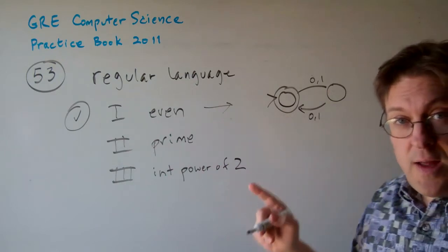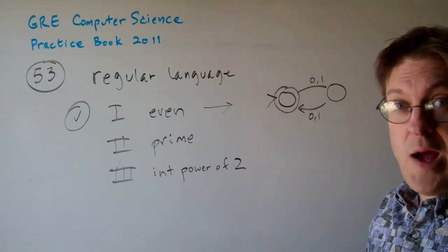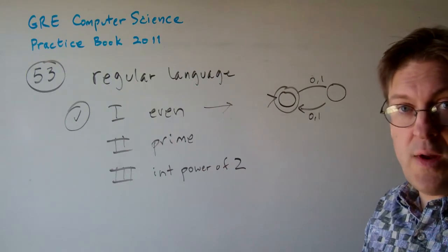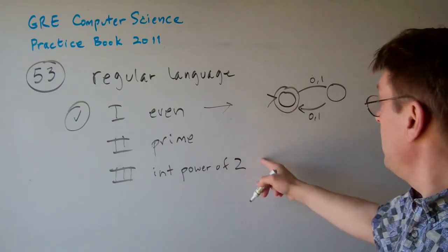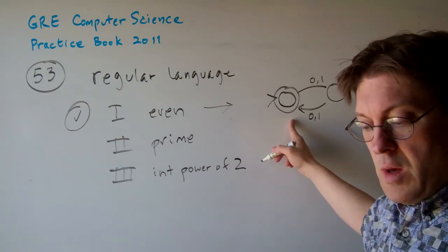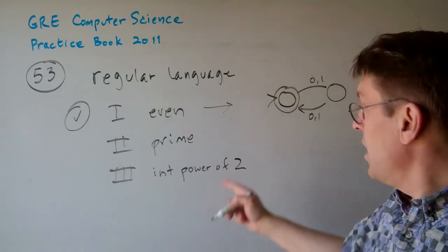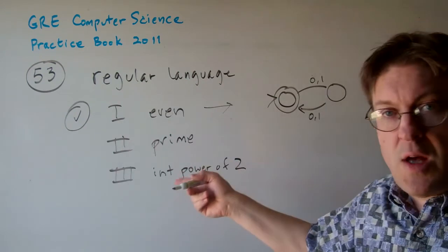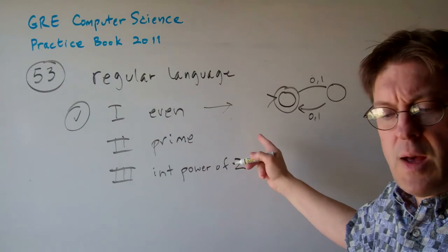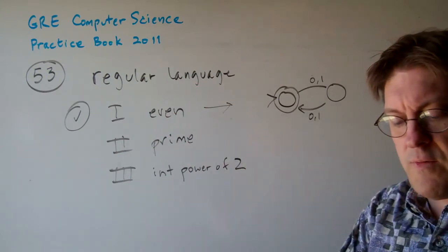How are we going to do a finite state automaton that's prime? There's no way to do that. There's no way to make one that's an integer power of 2 either. I mean, I'm not sure how you can prove that. It'll probably take a lot longer than this video can allow. But just think to yourself, how are you going to make a finite state automaton where the length of W is prime, or the length is an integer power of 2?